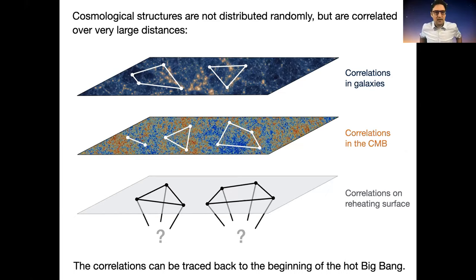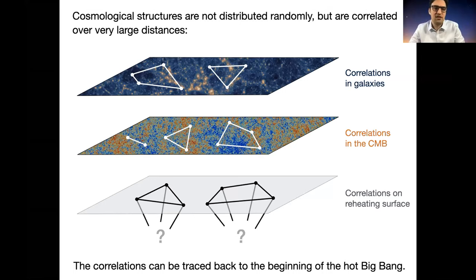Cosmology is a special type of science in the sense that we don't have repeatable and controlled experiments. All we can do is look at the universe, see patterns, and try to explain those patterns using cosmological evolution. One of the first things we notice is that the structures around us are correlated over very large distances. At late times we see correlations in the positions of galaxies; at earlier times, correlations in the microwave background temperature radiation. We can trace these correlations back to the reheating surface at the origin of the hot big bang.